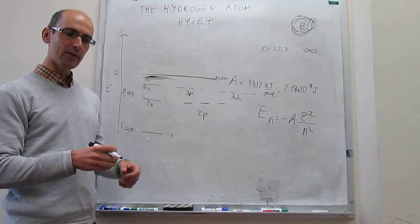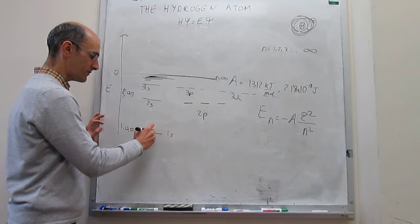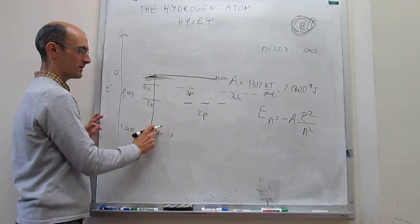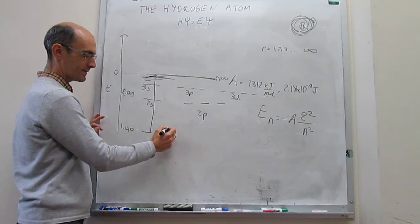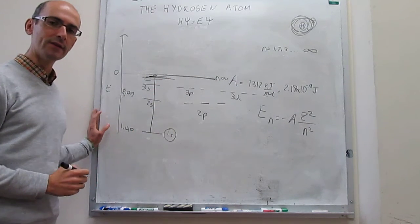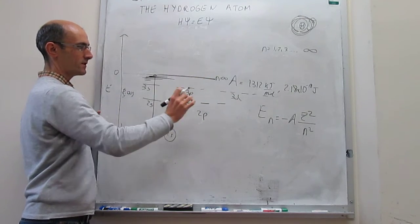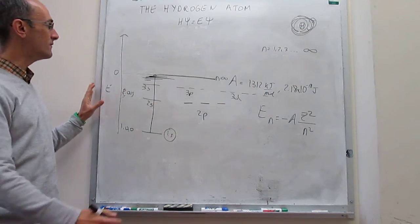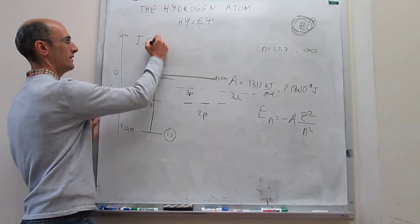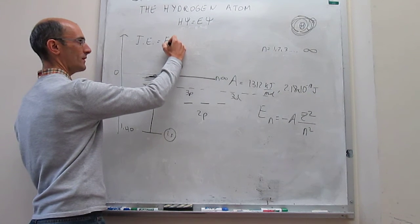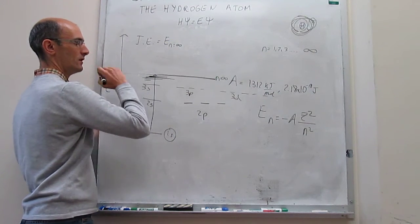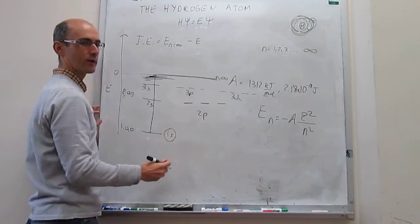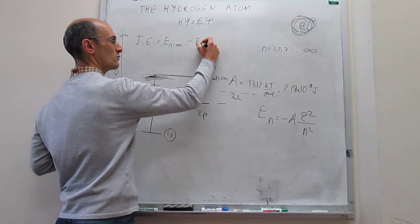To ionize — to completely remove the electron — you add energy until it's fully removed. Essentially, you're promoting the electron from the 1s solution to the N equals infinity solution, because at N equals infinity you reach the dissociation limit and the atom gets ionized. So the ionization energy IE equals the energy of the state at N equals infinity minus the energy of the ground state at N equals 1.